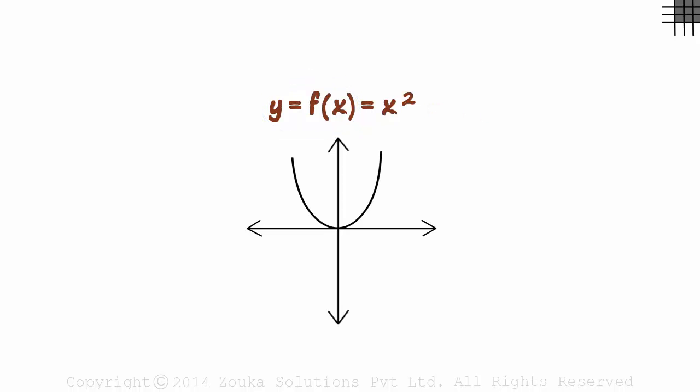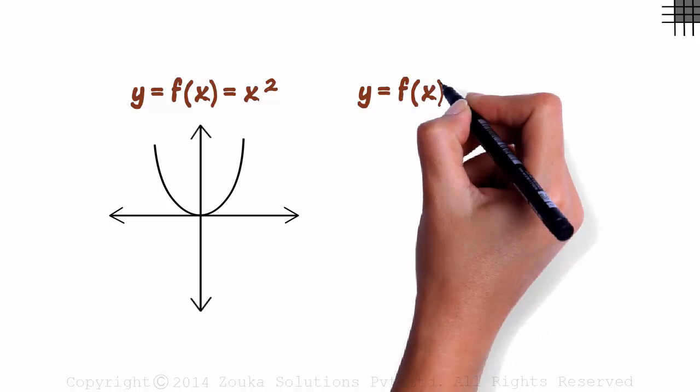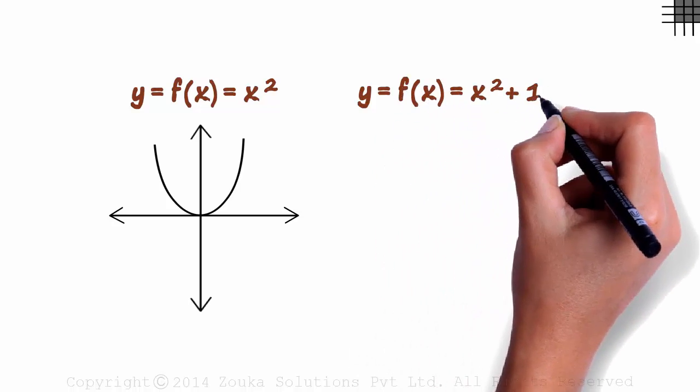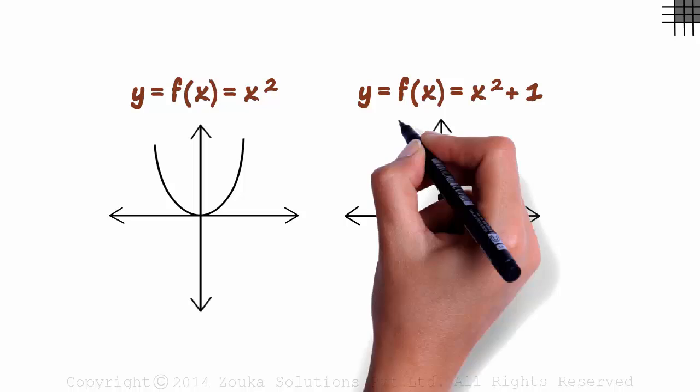Let's try making a few changes to this function. We change the function to f(x) = x² + 1. Make an attempt to draw an approximate graph of this function. When x is zero, y will be equal to one. Zero comma one will be one of the points on its graph. If you try out more values, you get a parabola like this.